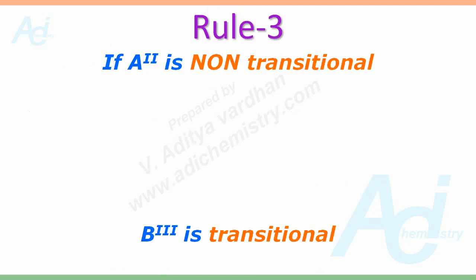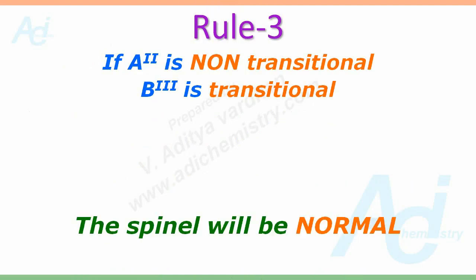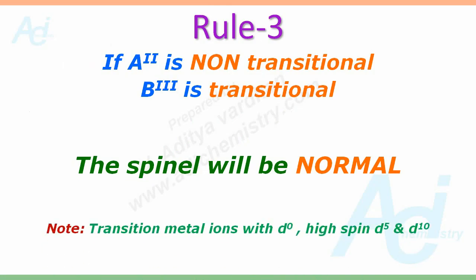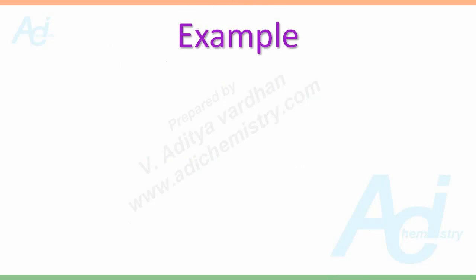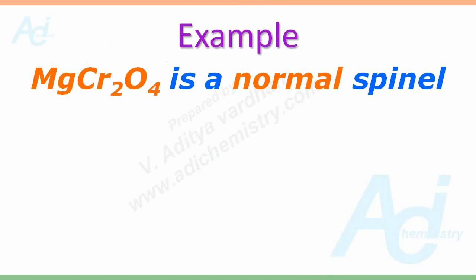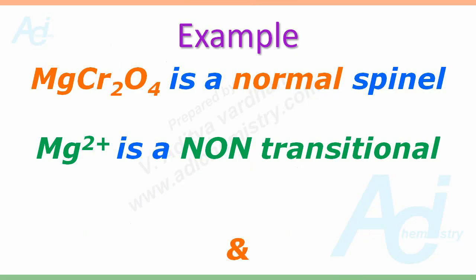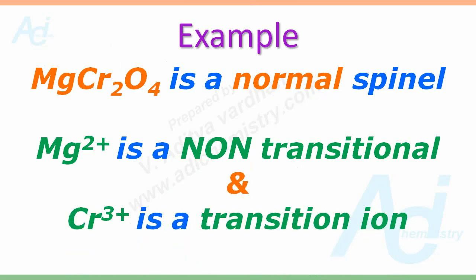Rule number 3: if A2+ is a non-transitional metal and B3+ is a transitional metal, the spinel will be normal. Note that according to the amendment discussed earlier, transition metal ions with D0, high spin D5, and D10 configurations behave as non-transition metal ions. For example, MgCr2O4 is a normal spinel because Mg2+ is non-transitional and Cr3+ is a transition metal ion.